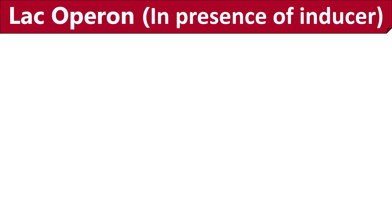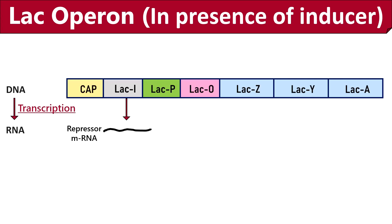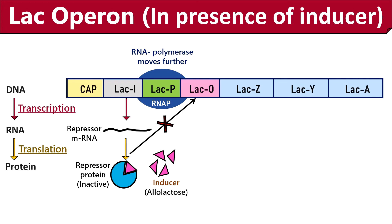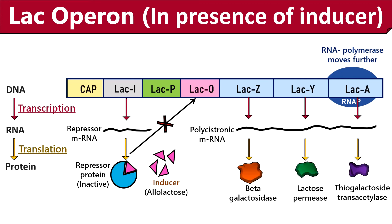Now we will study the lac operon model in the presence of lactose as an inducer. This is the DNA segment containing genes for the metabolism of lactose. Here the lacI gene produces repressor mRNA which on translation produces lacI repressor protein. In the presence of inducer, the repressor protein becomes inactive because an inducer blocks the binding site of the repressor protein to the operator region. So in this case, the repressor protein cannot bind to the operator region, and the RNA polymerase attached to the promoter sequences will move further by transcribing the structural genes into the polycistronic mRNA. A polycistronic mRNA is a single mRNA that can encode multiple proteins. Later the ribosomes translate the polycistronic mRNA into proteins or enzymes that are required for the metabolism of lactose.